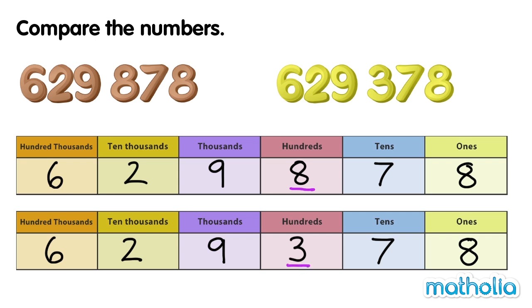800s are greater than 300s, so 629,878 is greater than 629,378. We can also say that 629,378 is smaller than 629,878.